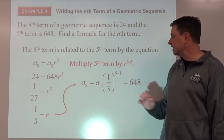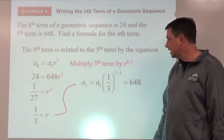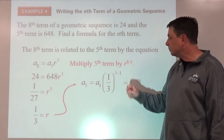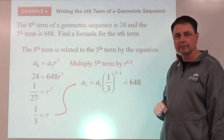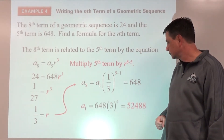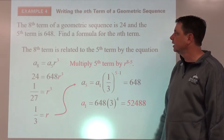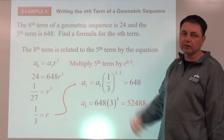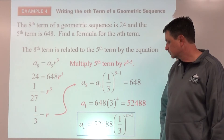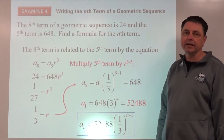Rather than dividing by the fraction directly, we multiply by its reciprocal. The reciprocal of one-third to the fourth power is three to the fourth power. Multiplying both sides by three to the fourth gives us a-sub-1. Since we're looking for the formula, we need a-sub-1, giving us a-sub-1 times r to the n minus 1.